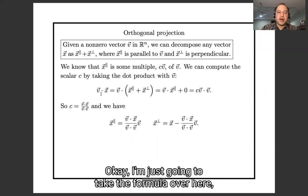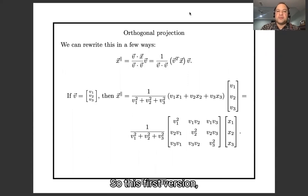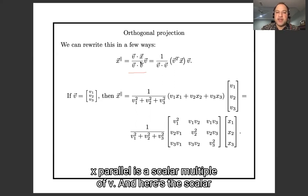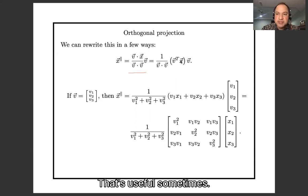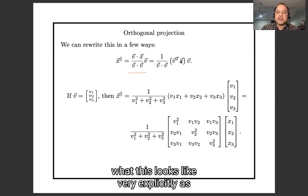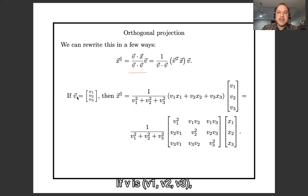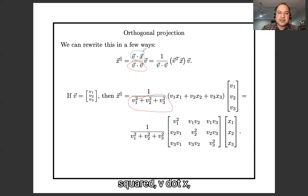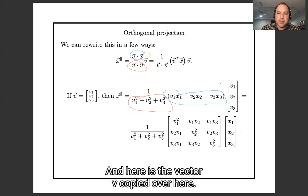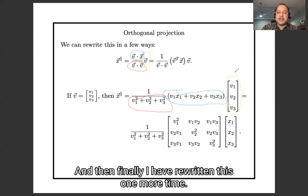I'm going to take the formula and rewrite it a couple of ways. The first version is what we had before: X-parallel is a scalar multiple of V, and here is that scalar. I can rewrite V dot X as V-transpose times X, which is useful sometimes. Writing this out component by component: if V is (v1, v2, v3), then V dot V is v1² + v2² + v3², and V dot X is v1·x1 + v2·x2 + v3·x3.